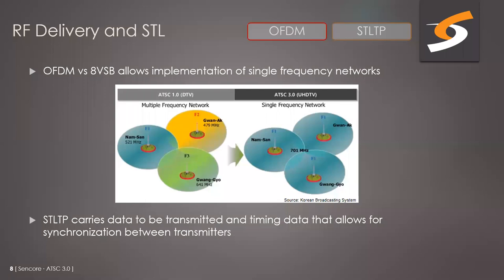The studio to transmitter link uses a special package called the STLTP that carries the data to be transmitted but also carries timing and synchronization data between transmitters. The package sent between the studio and transmitter is not exactly the same content that goes out the transmitter itself, which is why there's a separate package for that.